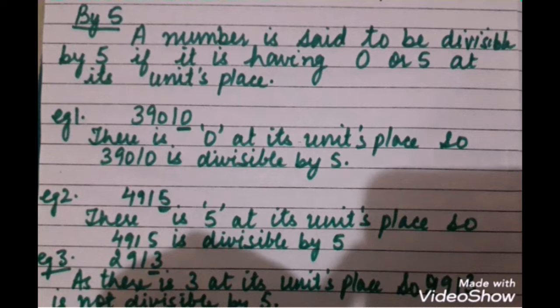In the next example, the number is 4915. The units place contains 5, and the condition for divisibility by 5 is that it should have 0 or 5, so yes, this number is divisible by 5. In example 3, the number is 2913 — there is 3 at its units place, so the number is not divisible by 5, as there is neither 0 nor 5 at its units place.